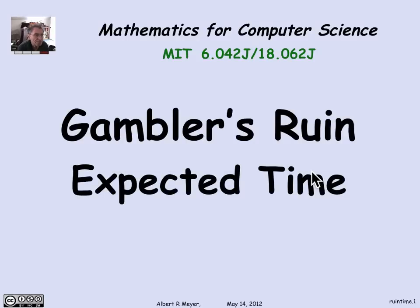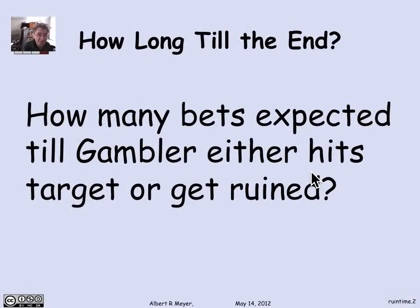We figured out the probability that you'll eventually win or go broke playing Gambler's Ruin. But there's a question about what 'eventually' means, namely what's the expected time that it takes to either reach your target or go broke. So let's look at that next. It's approached by the same technique — it's going to turn out to be a linear recurrence.